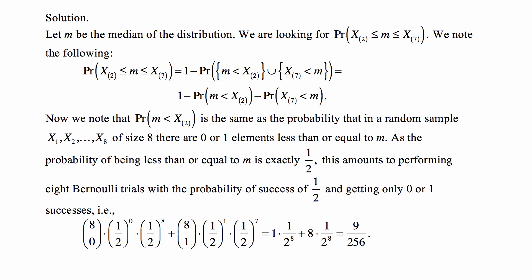So the probability of getting zero or one successes is 8 choose 0 times one half to the 0 times one half to the 8th plus 8 choose 1 times one half to the 1st times one half to the 7th. And that's exactly 9 divided by 2 to the 8th or 9 over 256.